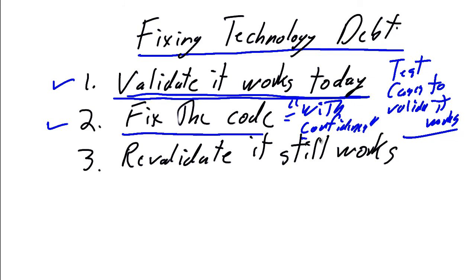And then we fix the code with confidence. And the key is, we fix the bad smells, we fix the issues, we resolve the technology debt, and we resolve only the technology debt. We want to make sure that the code functions 100% the same when we're done as it did before. All we're doing is removing the fragileness of the code itself, we fix the code with confidence, and then we revalidate that it still works.